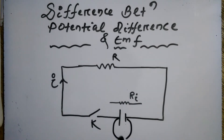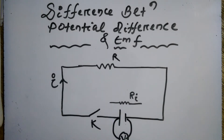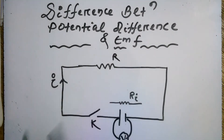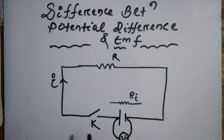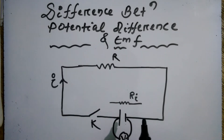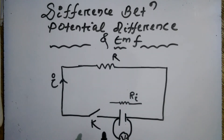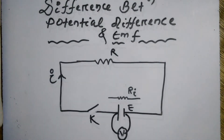When the circuit is open — the key is not closed — if you measure the voltage across the two terminals of the battery with a voltmeter, that value is the EMF. So EMF is defined as the voltage across the terminals of the battery when the circuit is open and no current flows through the external circuit.